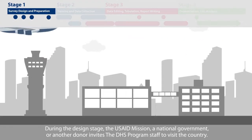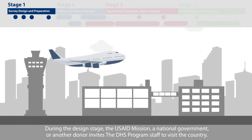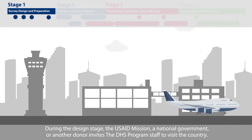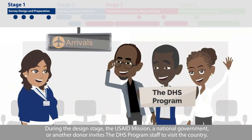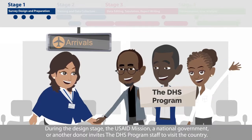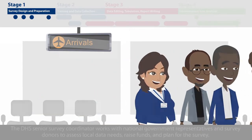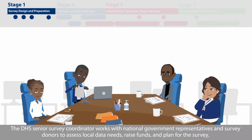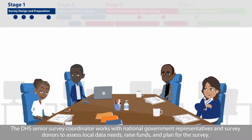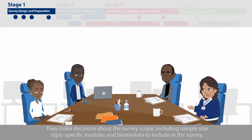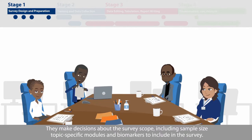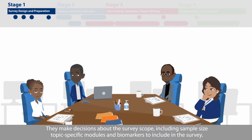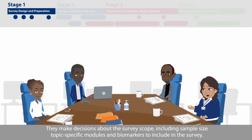During the design stage, the USAID mission, a national government, or another donor invites the DHS program staff to visit the country. The DHS Senior Survey Coordinator works with national government representatives and survey donors to assess local data needs, raise funds, and plan for the survey. They make decisions about the survey scope, including sample size, topic-specific modules, and biomarkers to include in the survey.